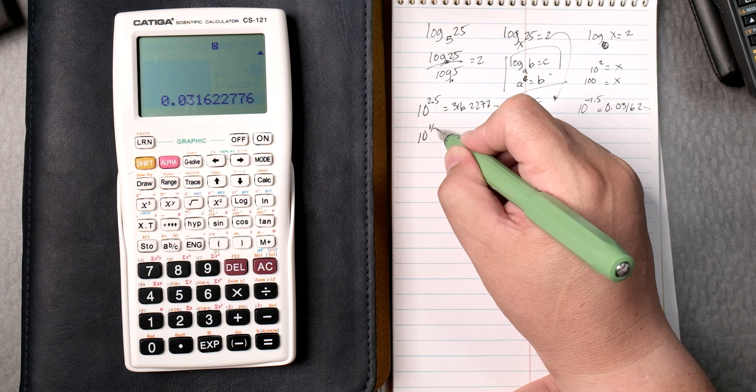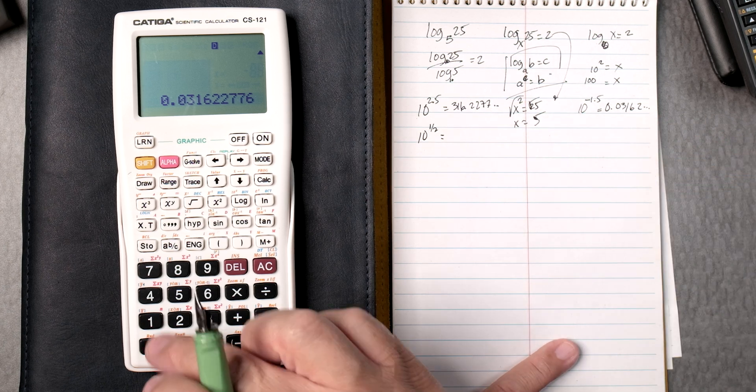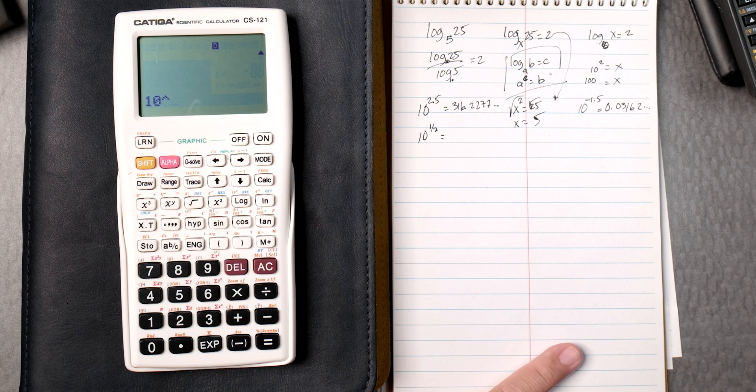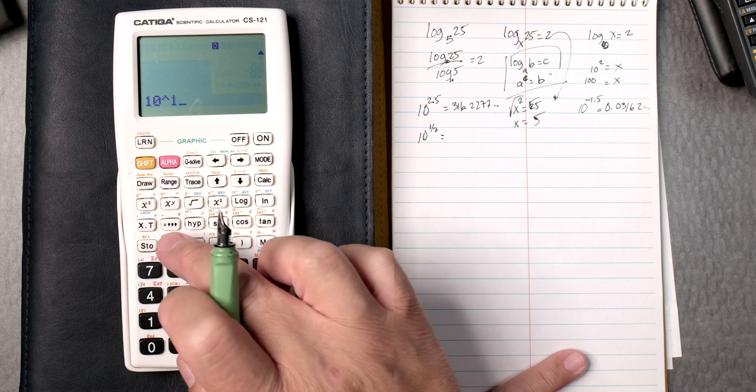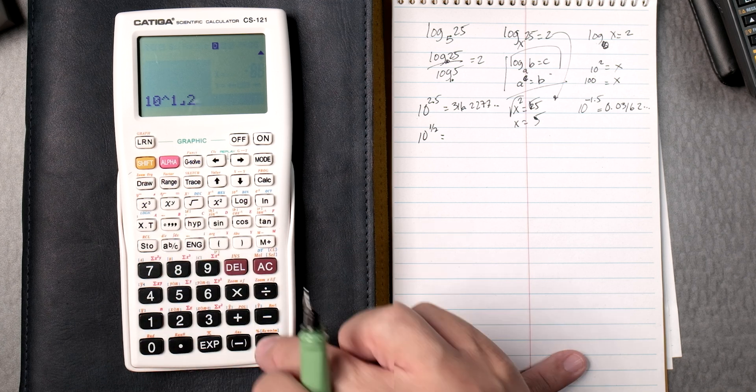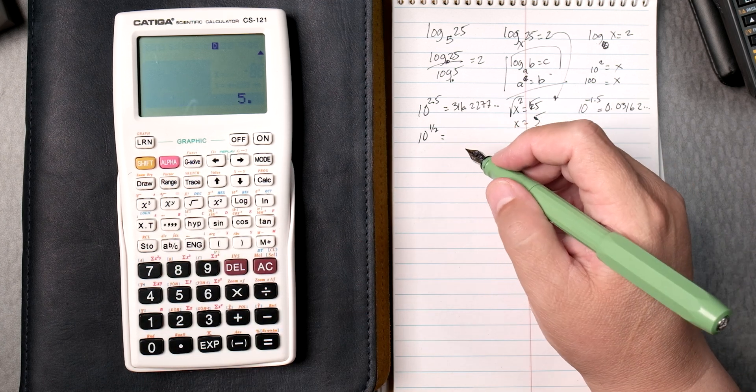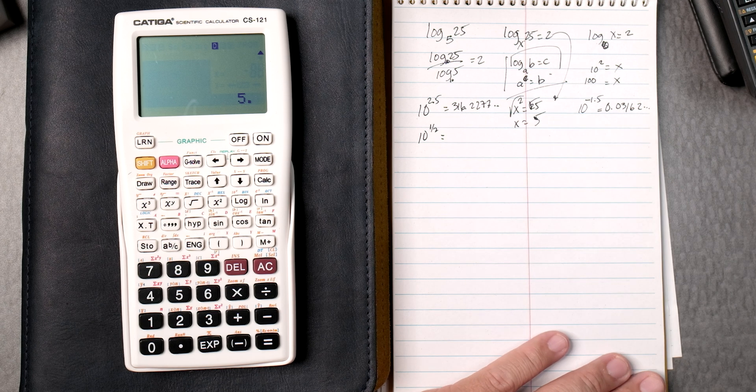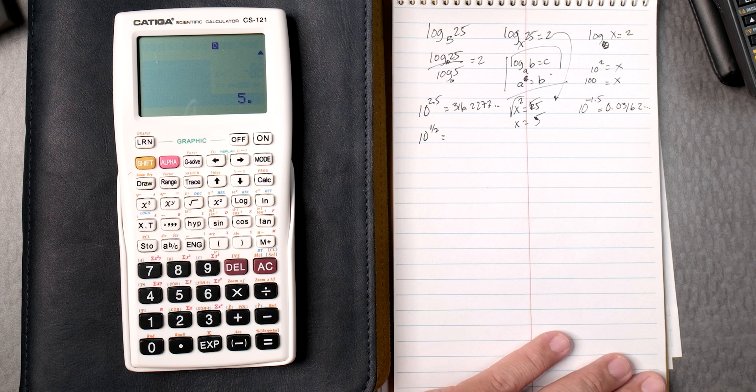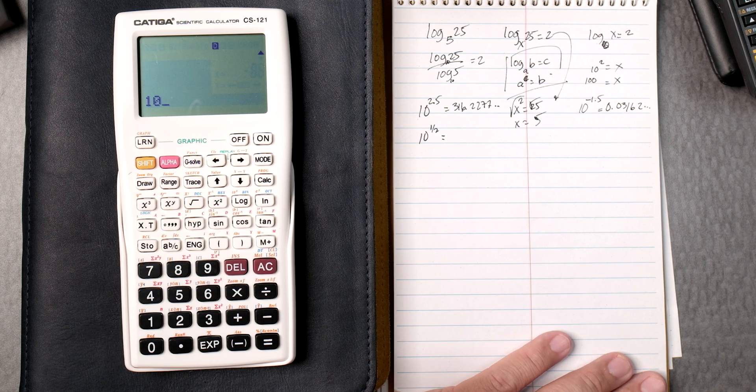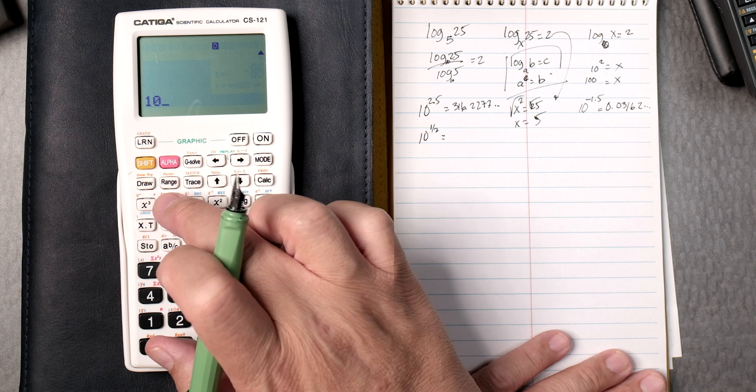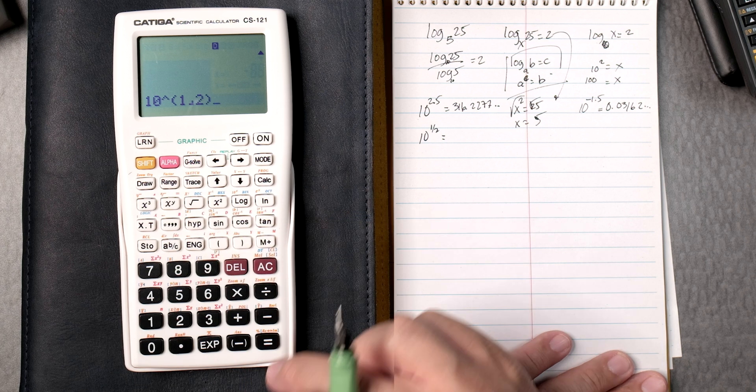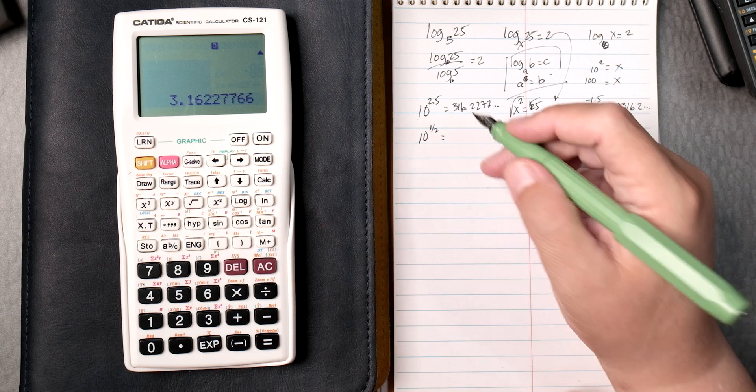How about 10 to the half? All right, we can still do this. 10 y to the x and we have an ABC button. We're going to do 1 ABC 2 equals, and it gives you 5, which is not the right answer. So let's do this, 10 y to the x, let's put parentheses, 1 ABC 2, close parentheses equals. There we go, that's the answer I'm looking for, 3.1622. So you need to put parentheses.